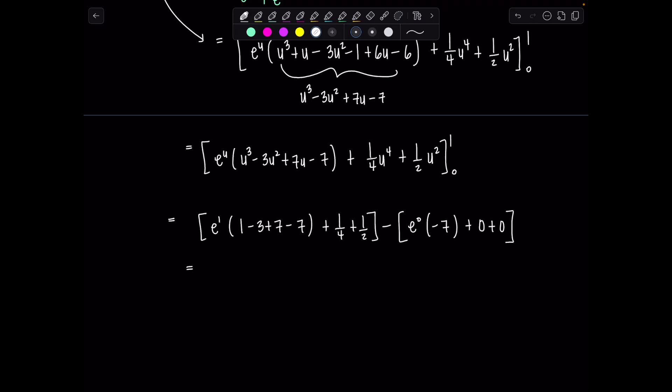So what do we got going on here? These cancel. This is negative 2. So we have negative 2e plus a fourth plus a half and then this is just going to give me positive 7 and then we're nearly there.